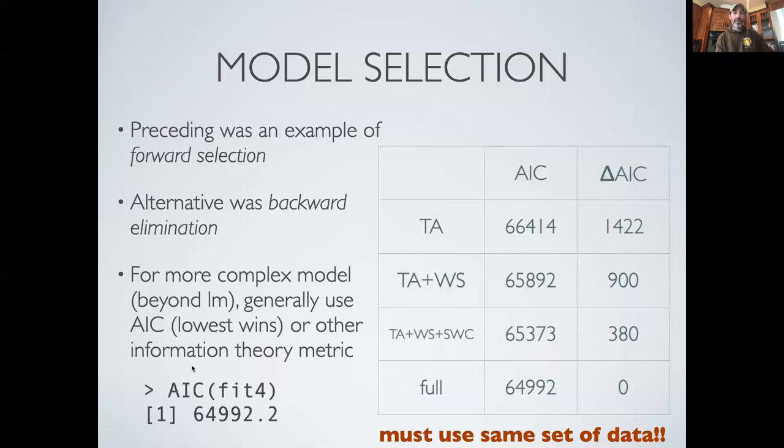The nice thing about AIC is that it works not just with linear models, but it'll also work as a way of comparing models. When we move on to more complex models beyond linear models, either non-Gaussian models or non-linear models or more complex process-based models.